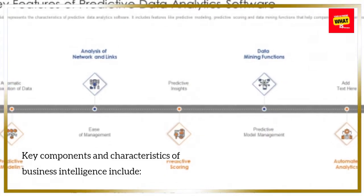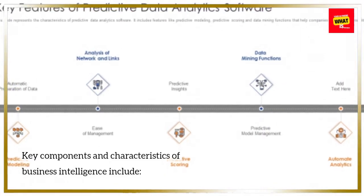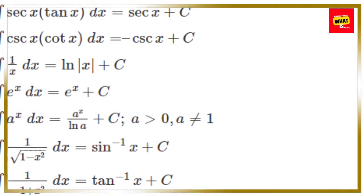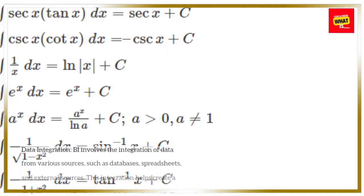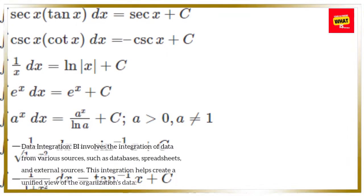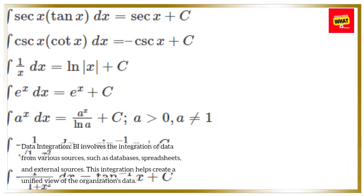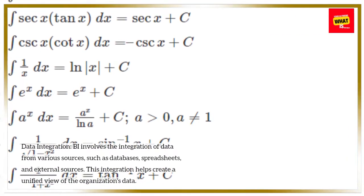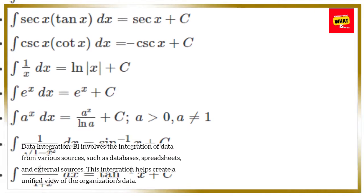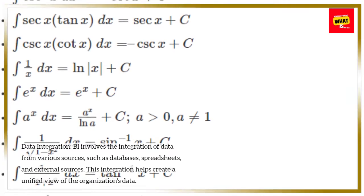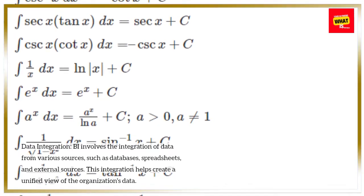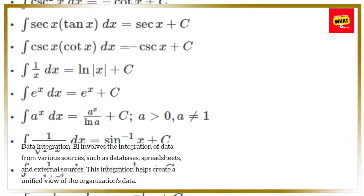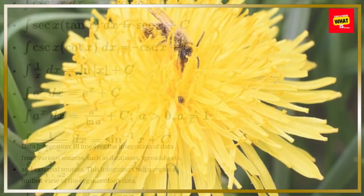Key components and characteristics of business intelligence include data integration. BI involves the integration of data from various sources, such as databases, spreadsheets, and external sources. This integration helps create a unified view of the organization's data.